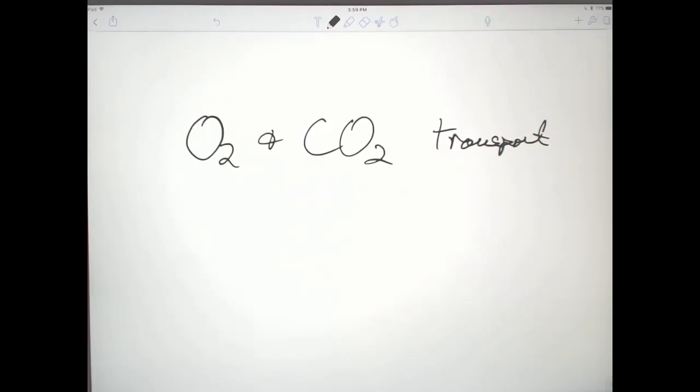How do the concepts of partial pressure and movements of gases in and out of water affect oxygen and carbon dioxide transport, and what are some of the adaptations that animals use to deal with these problems?